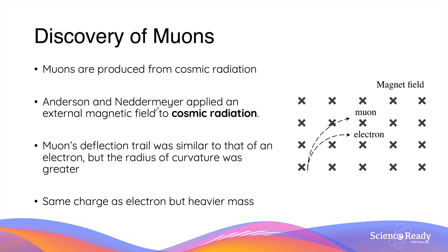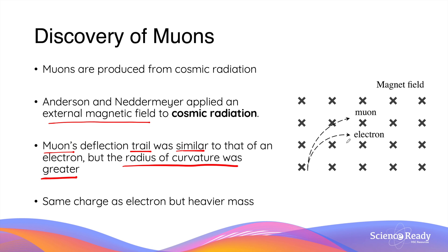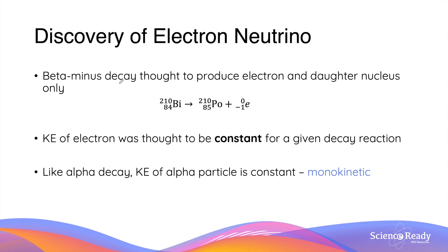Two scientists, Anderson and Neddermeyer, applied an external magnetic field to cosmic radiation obtained from the atmosphere. They observed a new particle — now known as the muon — deflected inside this magnetic field, with a deflection trail very similar to that of the electron, but with a much greater radius of curvature. The reason the muon has a greater radius is because it has the same charge but a heavier mass compared to the electron.